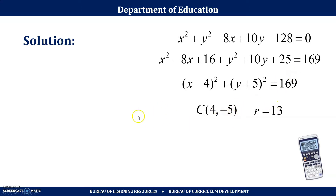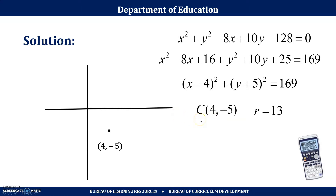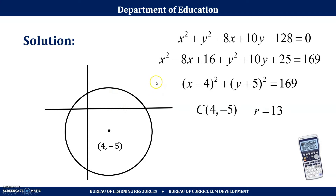Since we already have the center and the radius, we can make a sketch of how our circle looks. We are after the equations of the tangent lines to the circle that touch the x-axis. So the points of tangency on the x-axis are (x₁, 0) and (x₂, 0).